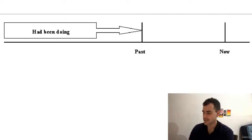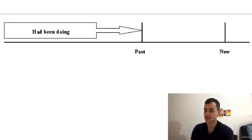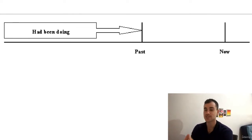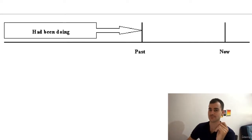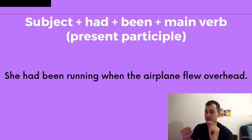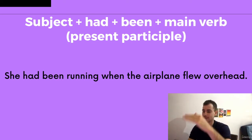You can see the point now and then the point past. The past perfect continuous expresses something you had been doing before that past point. She had been running when the airplane flew overhead.